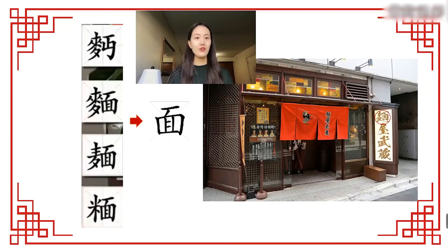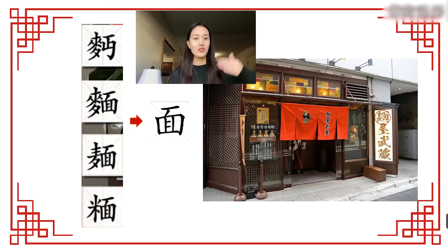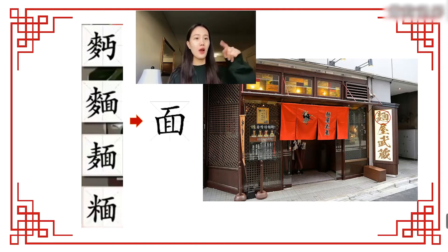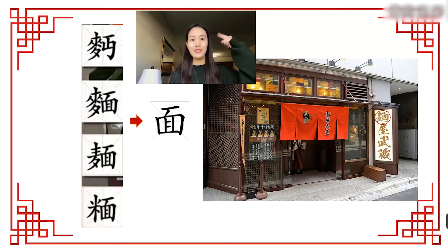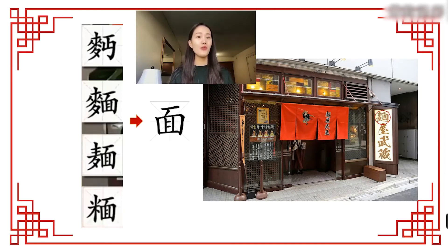Here we can see the evolution of the Chinese character 面 — from complex to simple. Who knows why there is the component for wheat (麦, mài)? Yes, because flour is made of wheat: 面是小麦做的 (miàn shì xiǎo mài zuò de).